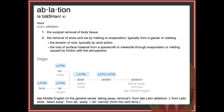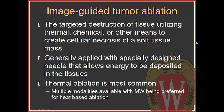We'll start by defining what ablation is. Today we're going to talk about image-guided tumor ablation: specifically the targeted destruction of tissue utilizing either thermal, chemical, or other means to create cellular necrosis of a soft tissue, usually a mass or a tumor, externally applied with a specially designed needle that allows energy to be deposited in the tissues. Thermal ablation is by far the most common and what I'm going to focus on today.